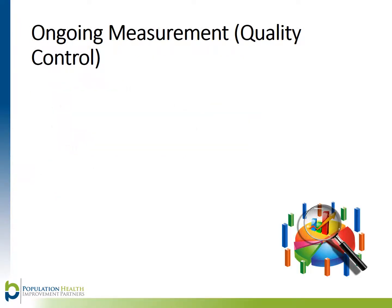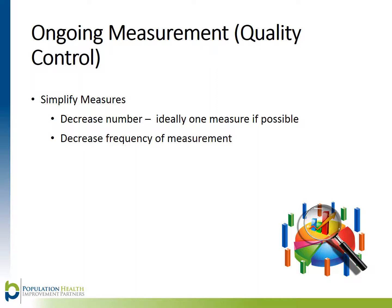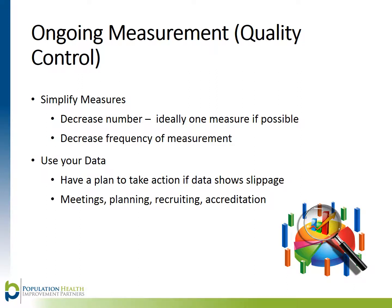When doing an improvement project, measurement is a key ingredient. Ongoing measurement doesn't have to be complex. Simplifying this component at this phase in the process is recommended. Ways to simplify include decreasing the number of measures, usually ideally one measure if possible, and decreasing the frequency of measurement. It's also critical to use the data you have collected. Have a plan to take action if data shows slippage. Use your data to showcase your work at meetings, planning for additional QI projects, recruiting purposes, and working towards accreditation.